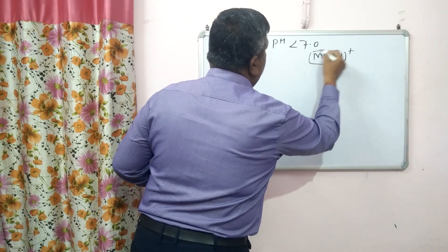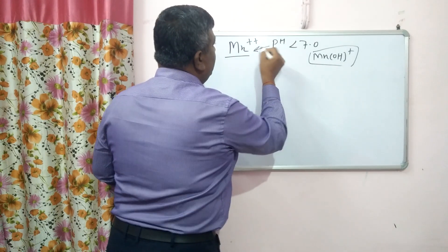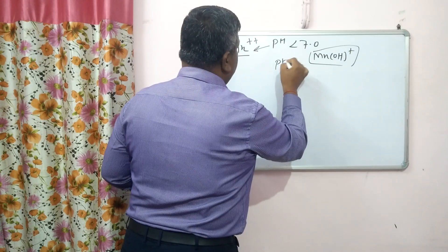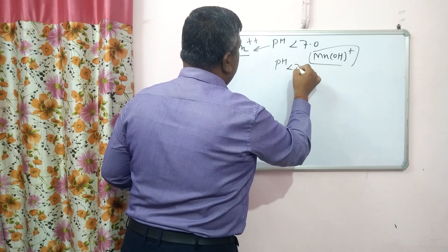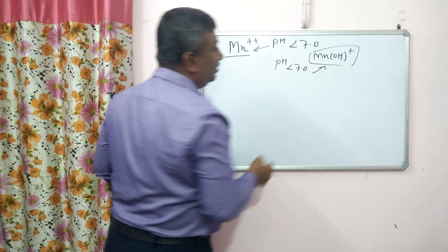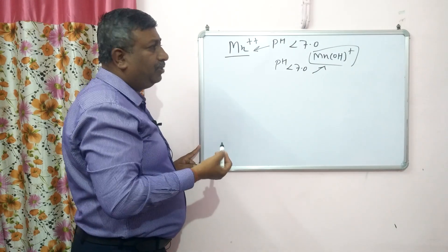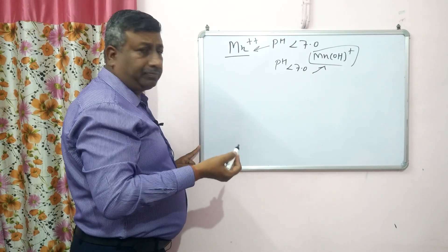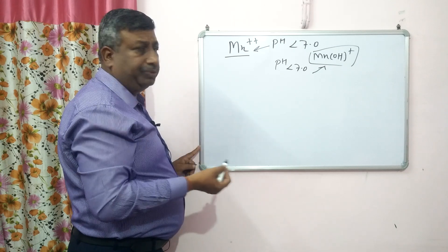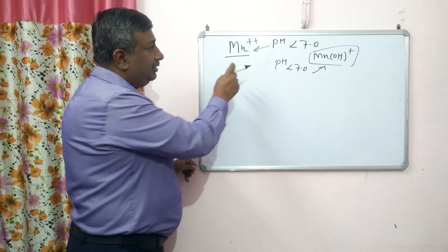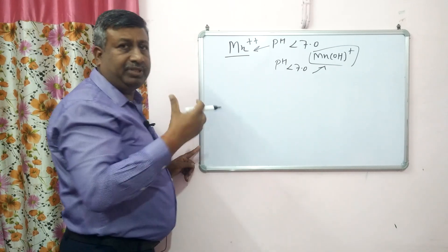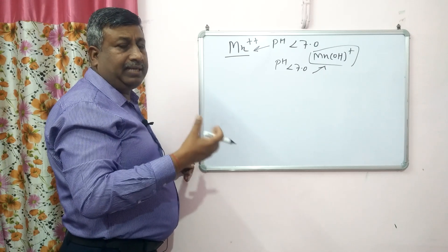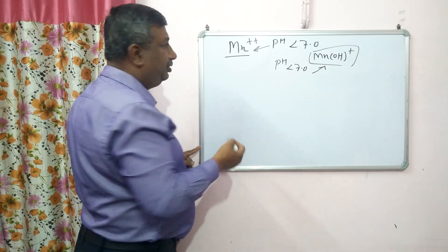At pH less than 7, Mn²⁺ is present. If pH is more than 7, hydroxide forms also exist and availability is reduced. At high pH, these hydroxide forms are less soluble, and that is why manganese availability is reduced.